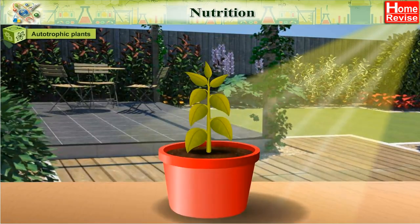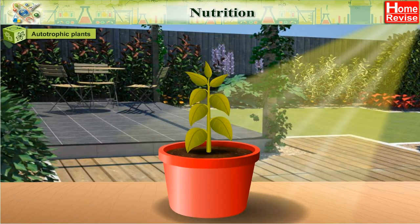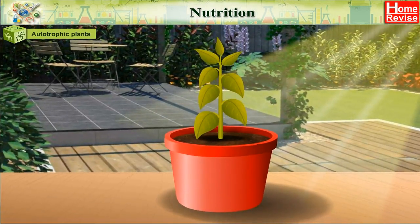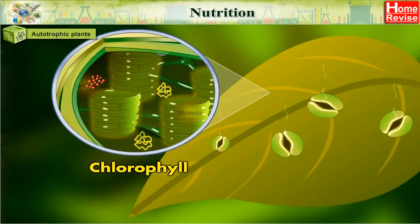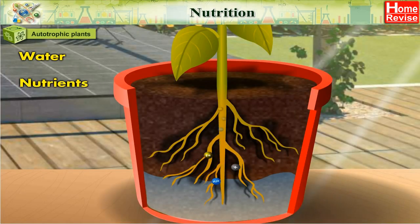Autotrophic plants: how do plants produce their own food? Plants also need food for their growth. They can produce their own food with the help of sunlight and chlorophyll. Plants make their food in their leaves using water and nutrients from the soil.